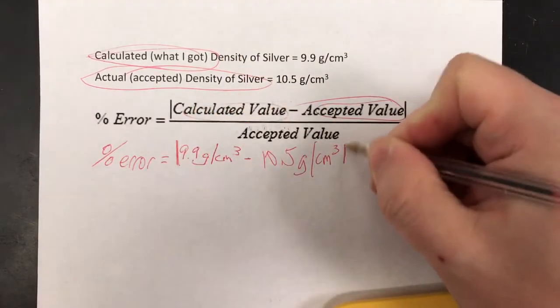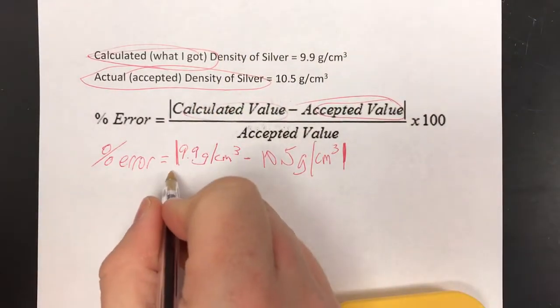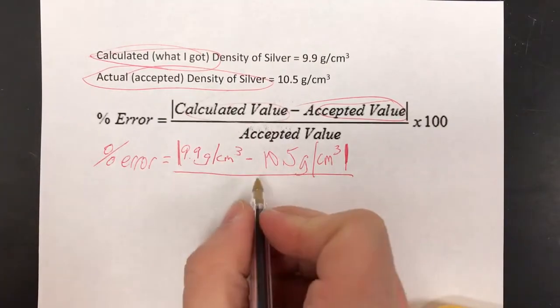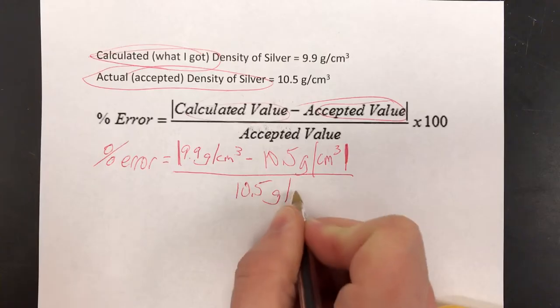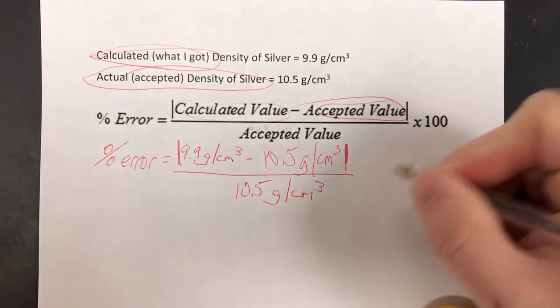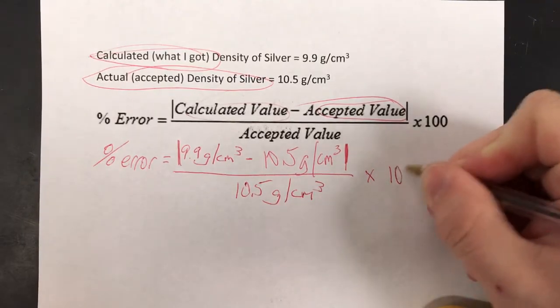That whole thing goes in absolute value bars. Divide that all by the accepted value which is 10.5 grams per centimeter cubed times a hundred.